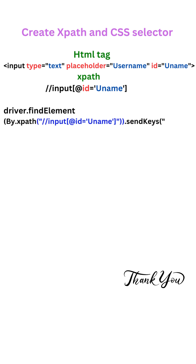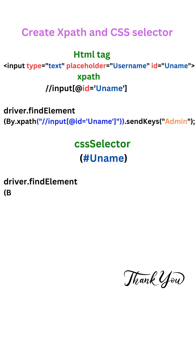Next, we write the CSS selector using the id attribute. So we can write hashtag followed by the id name, then write the statement and pass the text using the send_keys method.